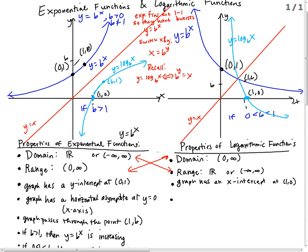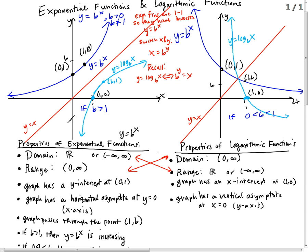Exponential functions have horizontal asymptotes at y equals 0. But we flip the x and y, so if the exponential has y equals 0, the logarithm will have x equals 0. We flip the x and y. It's not going horizontal anymore — now it's vertical. So the graph has a vertical asymptote at x equals 0, which is the y-axis. That means it will never cross the line x equals 0, or the y-axis. Try it with your calculator — can you put in log of a negative number? Nope. Log of zero? Nope. It's never going to cross.